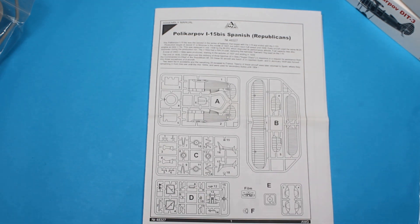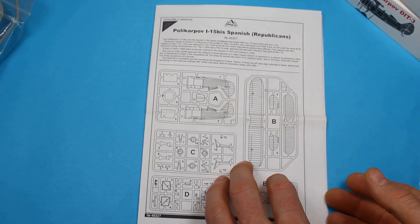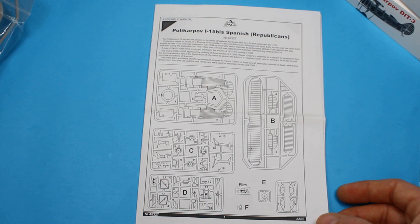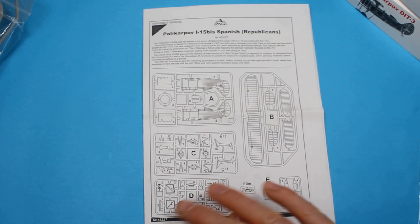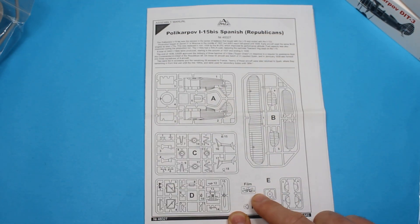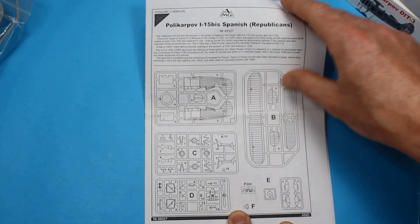It's an interesting aircraft. What we've got here is a short run kit from AMG. Typical stuff. Sprues laid out there. We've got a bit of film for the instrument panel. And then we're straight in.